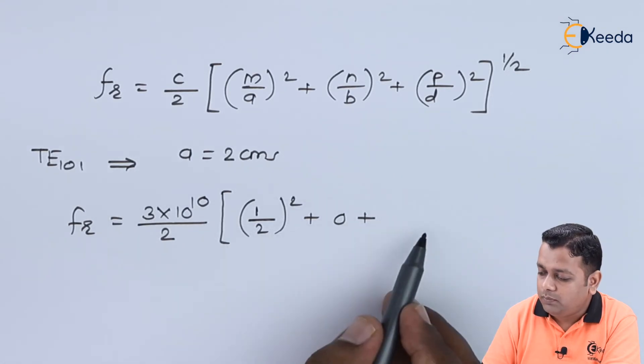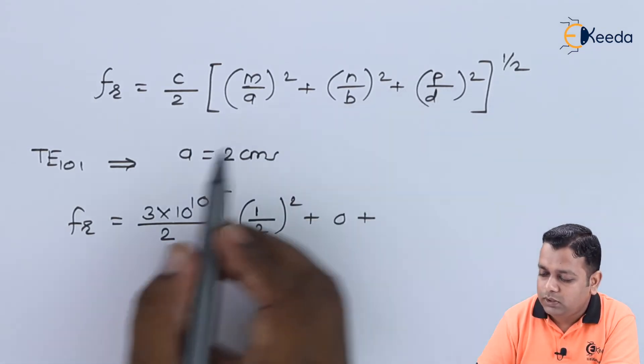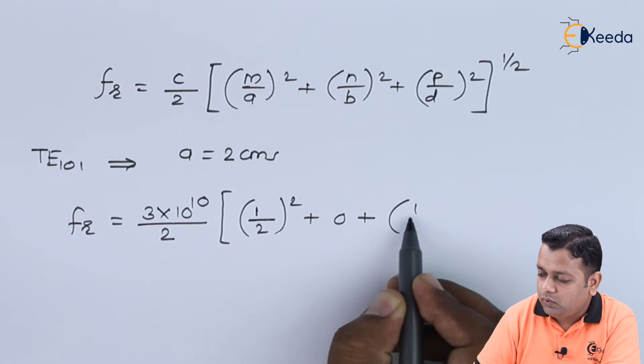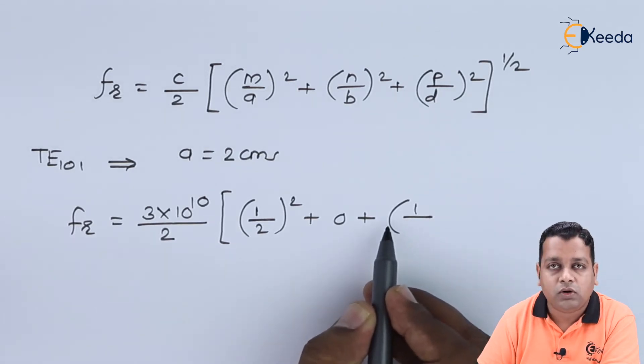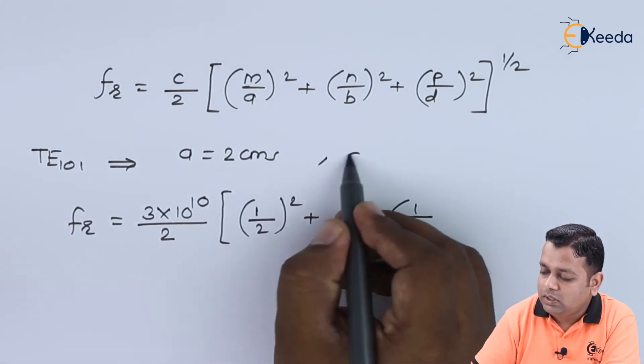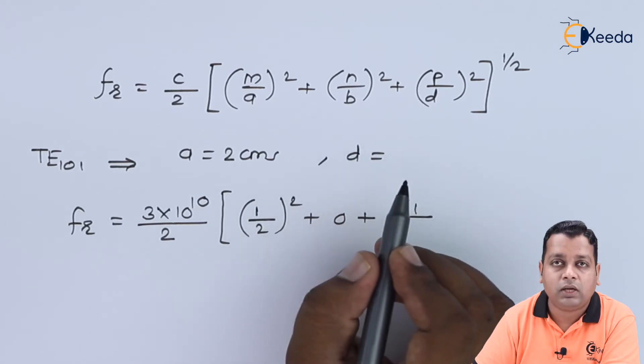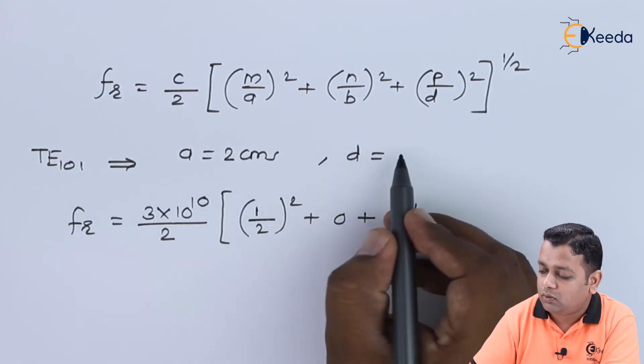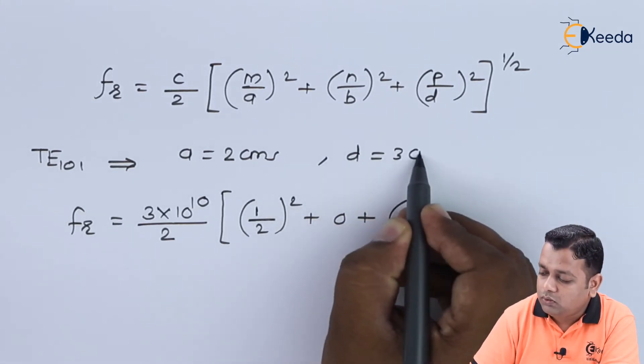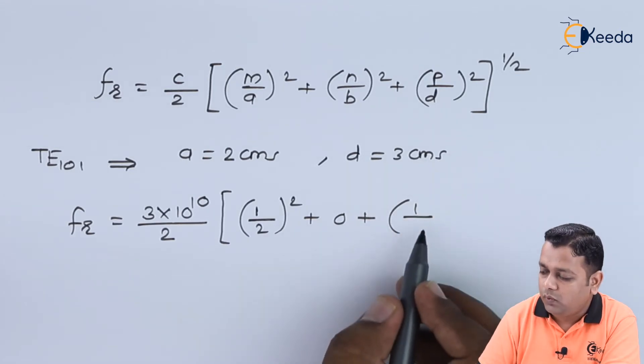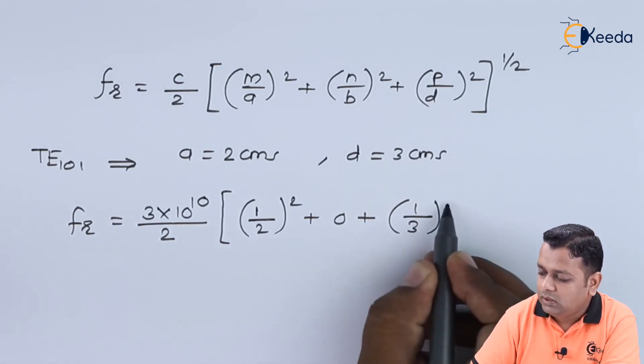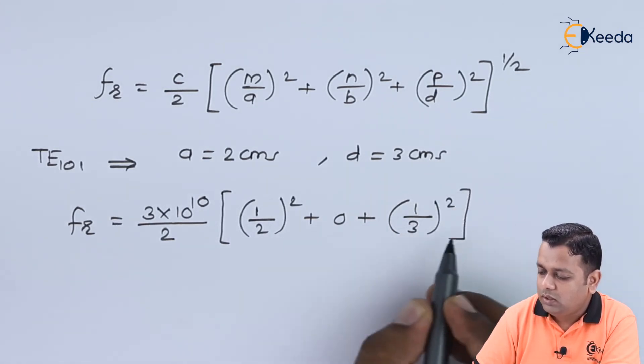In the third place we have p, which equals 1, divided by small d. Small d is the length of the given cavity resonator, equal to 3 centimeters. So 1 divided by 3, which is also to be squared.